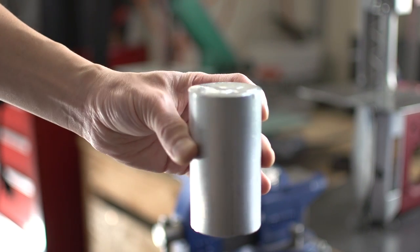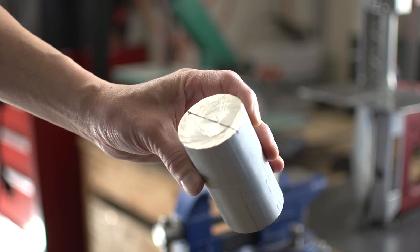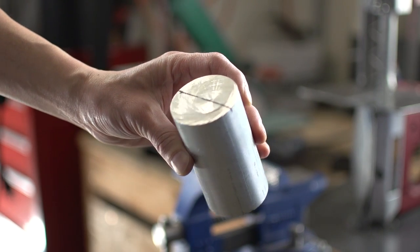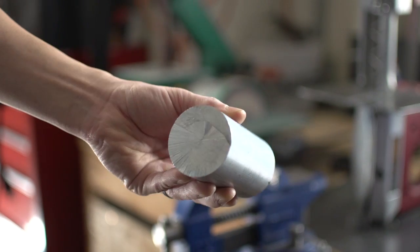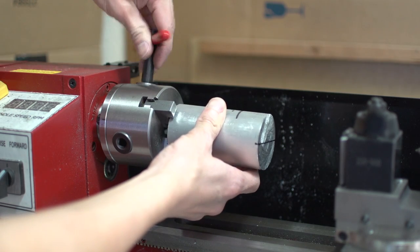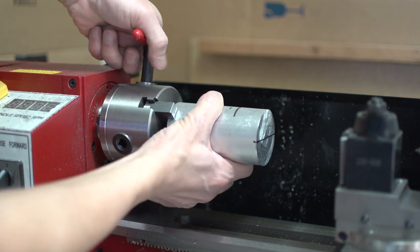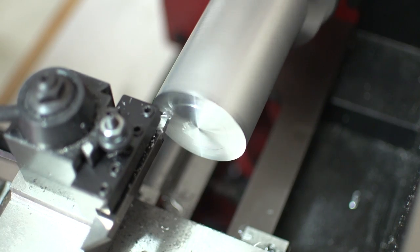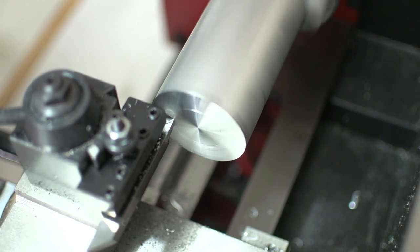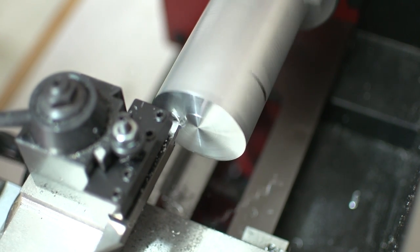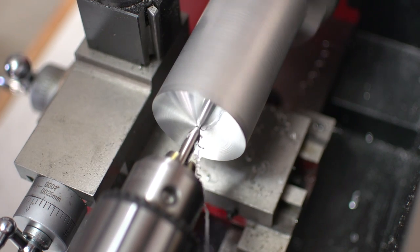Alright, with the post finished we need to make the nut that secures down onto the post. And I'm going to use this aluminum stock. This is 2 inch as well but it's way less painful to deal with because it is aluminum. It was like a dream. It was so nice.